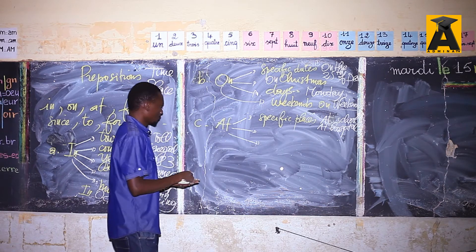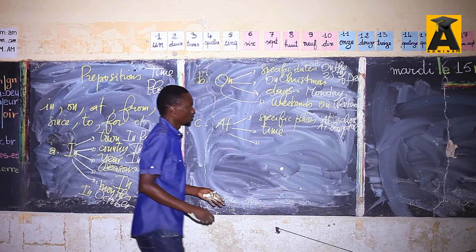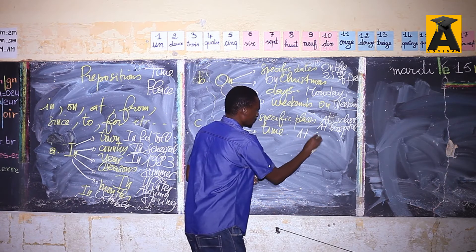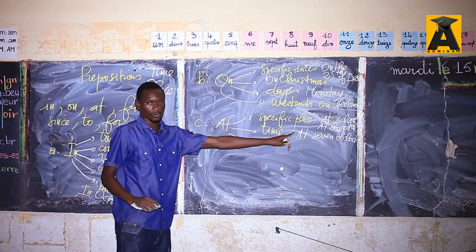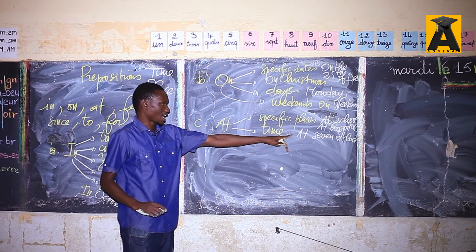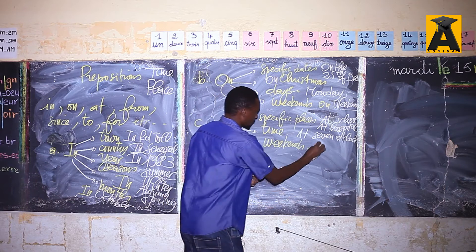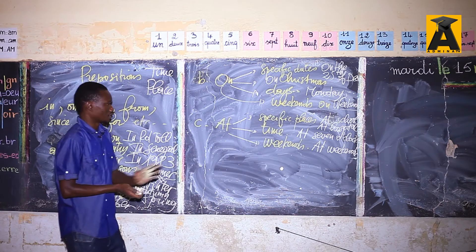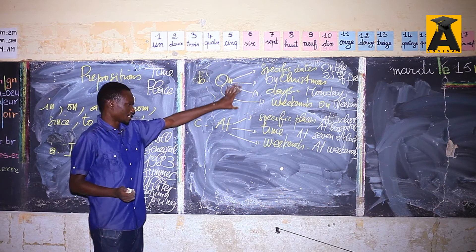'At' also goes with time. For example: tomorrow I wake up at seven o'clock sharp. You have class at eight o'clock. 'At' can also go with weekends — you can say 'at weekends', just as you can say 'on weekends'. It's optional. Most teachers accept both 'at weekends' and 'on weekends' since it's a difference between American and British English. At this level, it doesn't matter which you use.